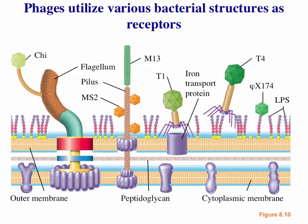Phages can infect bacteria using very varied receptors. Some bind to the flagellum of bacteria, like the chi phage. Others like M13 and MS2 bind to the pili of bacteria and use that to get their nucleic acid inside — remember the pili are hollow, as is the flagellum. Others use specific receptors: T1 uses the iron transport protein complex, T4 recognizes other outer membrane molecules, and phiX174 can recognize LPS. This different receptor usage mediates tropism — what kind of bacteria can be infected.